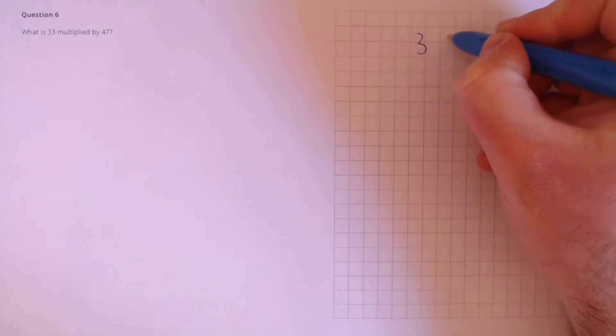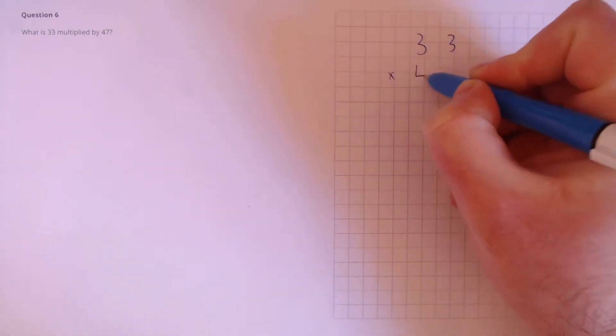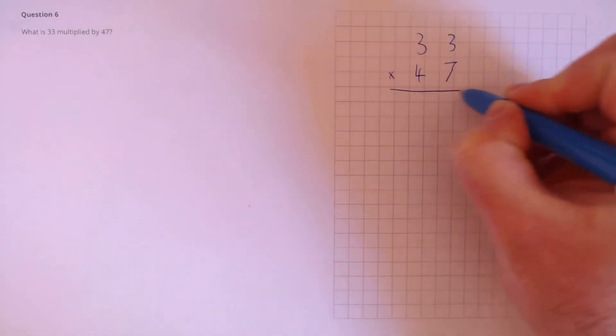So in order to do this, we're going to write these in a column. 33 times 47.